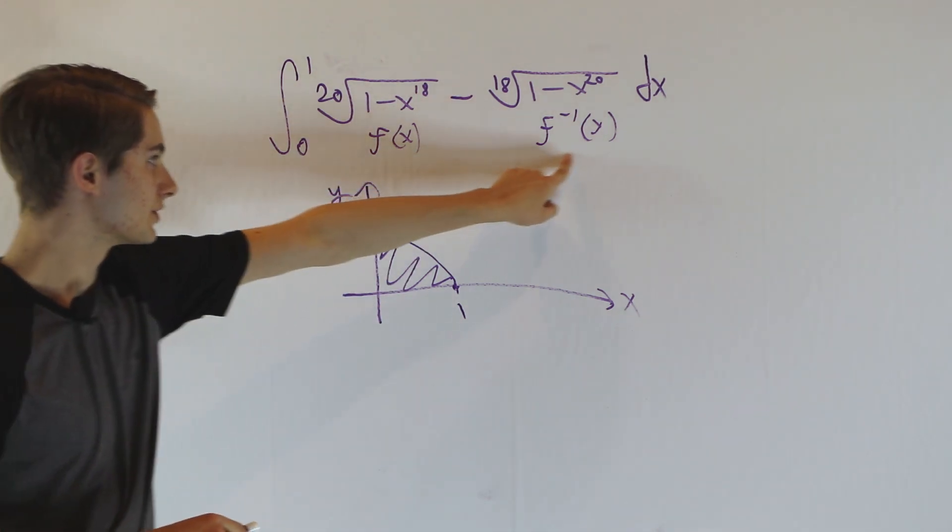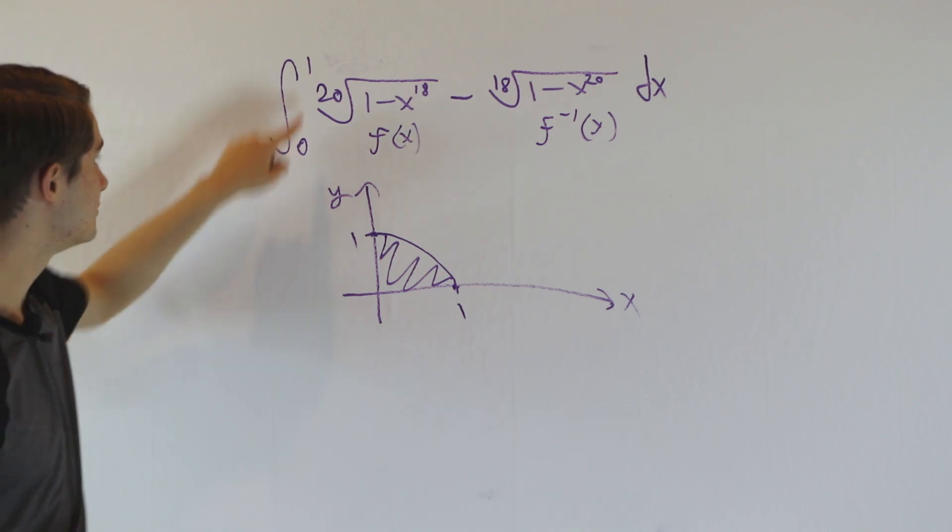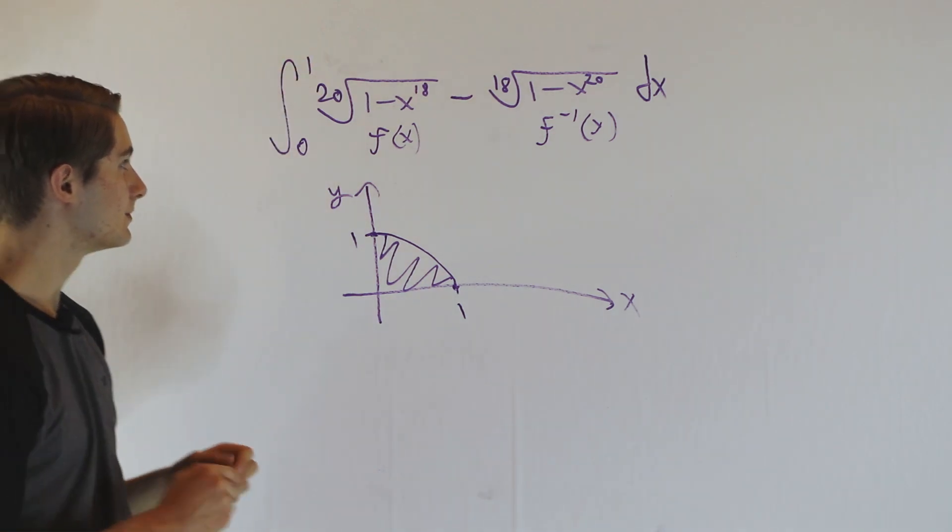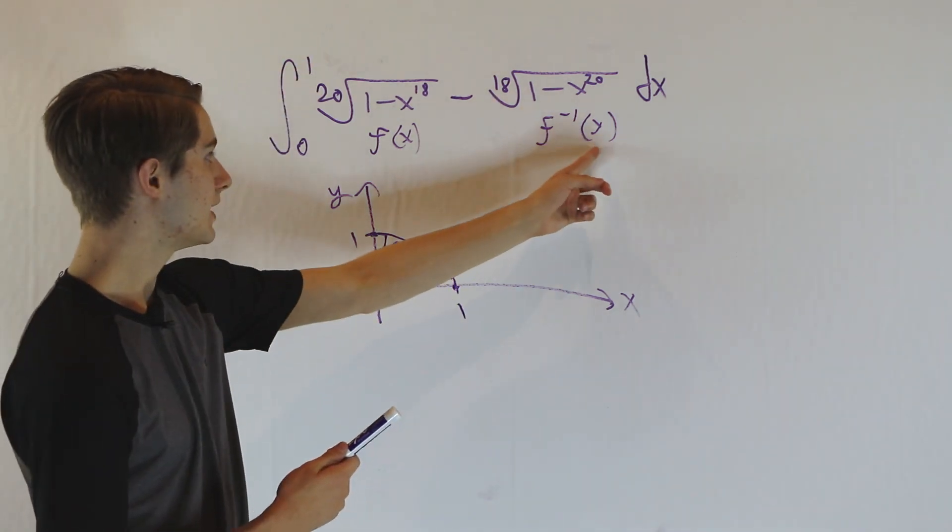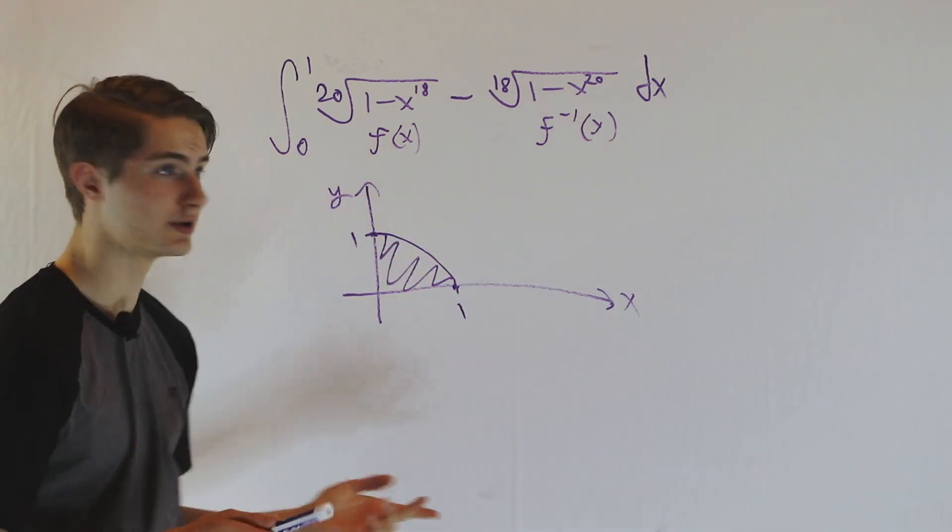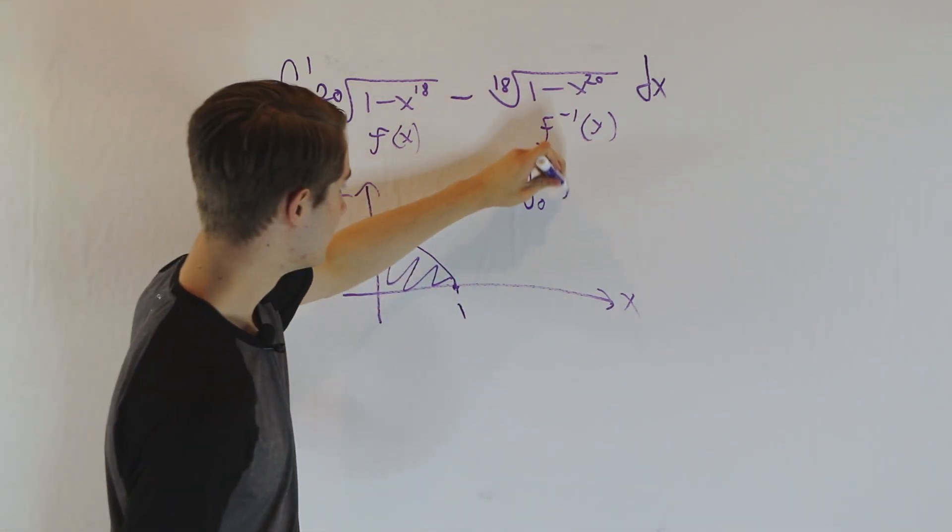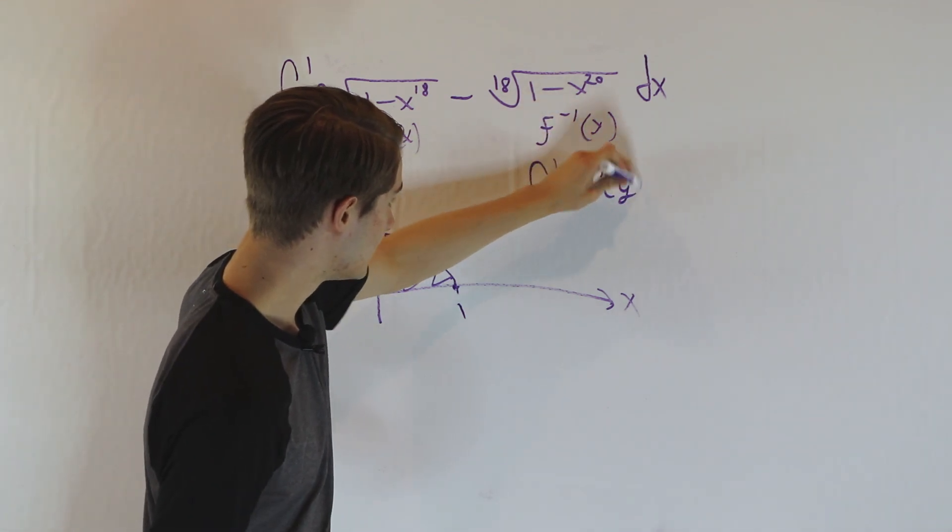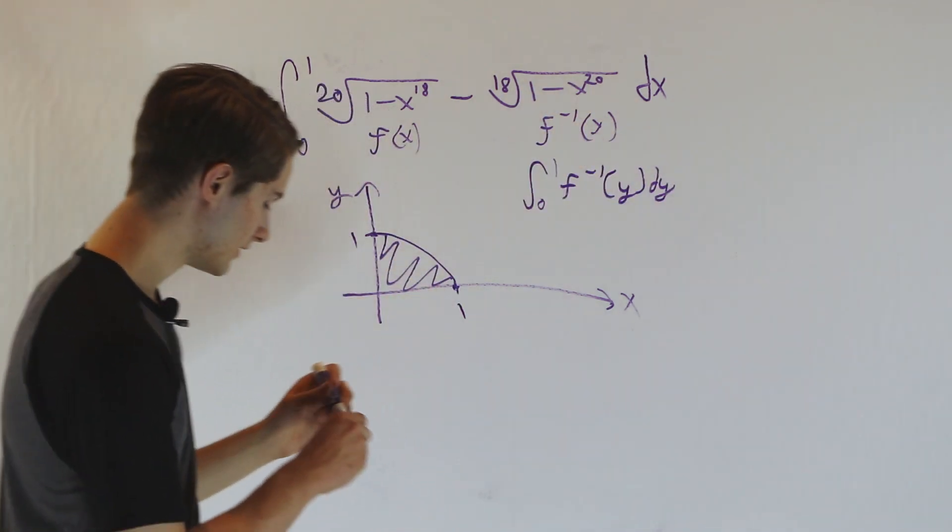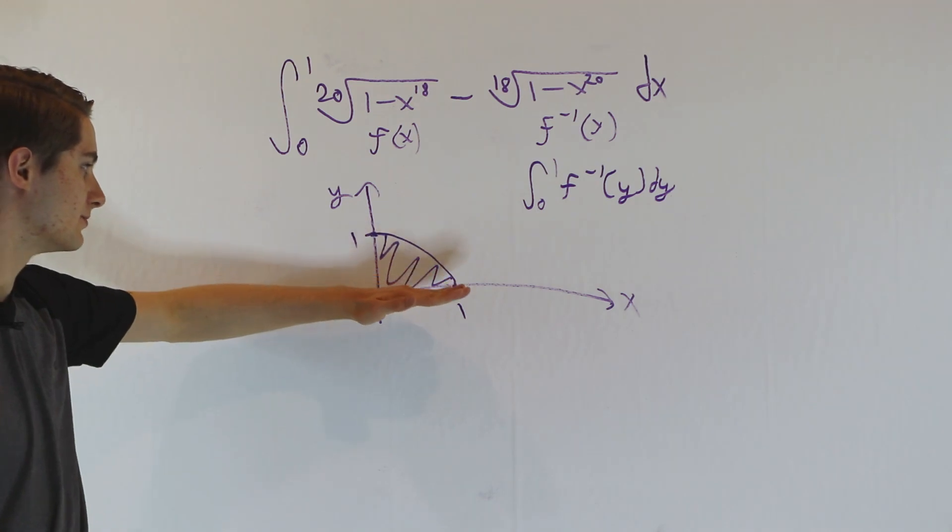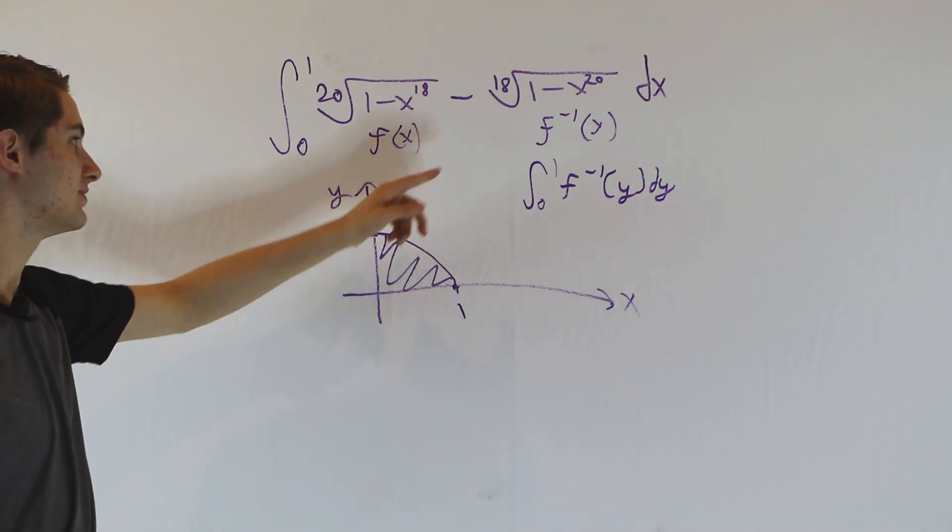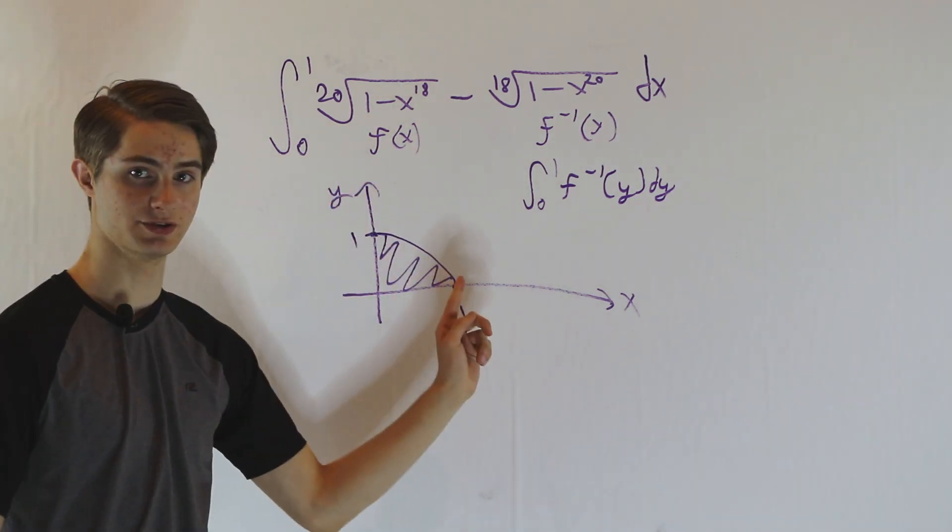Now let's look at the inverse function going from 0 to 1. It doesn't matter if we put in an x or a y. What if we think about the integral from 0 to 1 of f inverse of y, dy? This time y is going from 0 to 1, which is the same as the inverse with x going from 0 to 1.